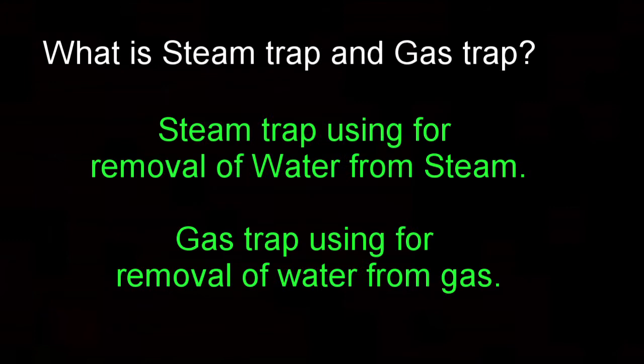What is a steam trap and gas trap? A steam trap is used for removal of water from steam. A gas trap is used for removal of water from gas.